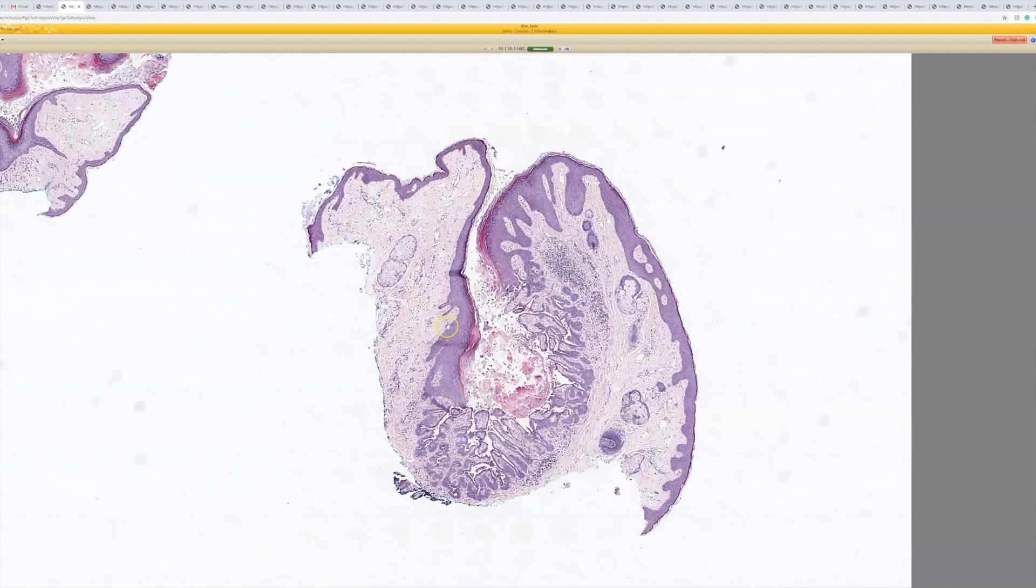like an invagination, or sometimes it'll look totally like a cyst, because remember, anything that's invaginated that has an opening to the surface, like a punctum, like you'd see in a follicular cyst, epidermoid cyst, whatever. If you cut straight down the middle, you might get a cut through the punctum and get to see the opening to the surface.